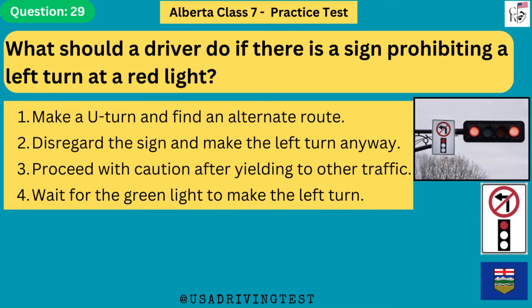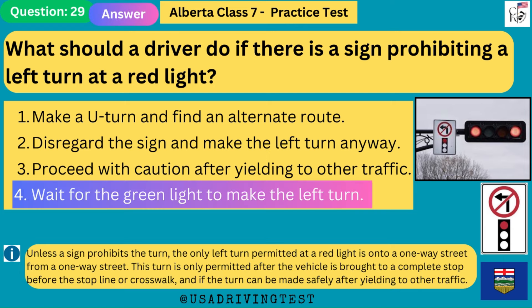What should a driver do if there is a sign prohibiting a left turn at a red light? 1. Make a U-turn and find an alternate route. 2. Disregard the sign and make the left turn anyway. 3. Proceed with caution after yielding to other traffic. 4. Wait for the green light to make the left turn. The answer is 4: wait for the green light to make the left turn. Unless a sign prohibits the turn, the only left turn permitted at a red light is onto a one-way street from a one-way street, and only after a complete stop and yielding to other traffic.